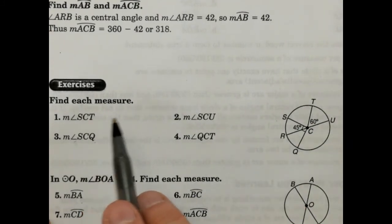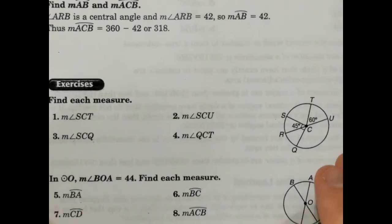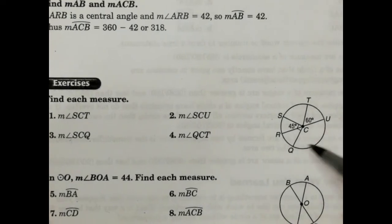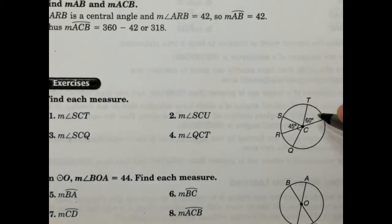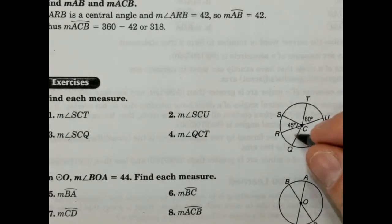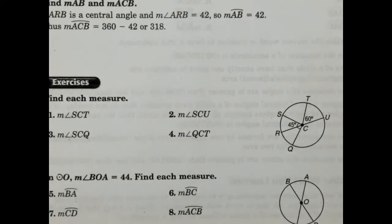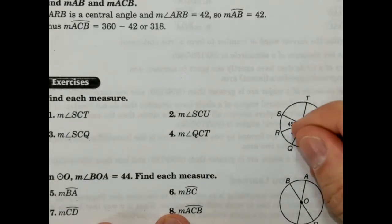So the first one we're looking for is SCT. Now what I find easiest, honestly, is to fill these in first and then go back and see which ones they want. I just find that to be a lot easier. This is 45 degrees. We know these two have to be complementary because this is a 90 degree angle.